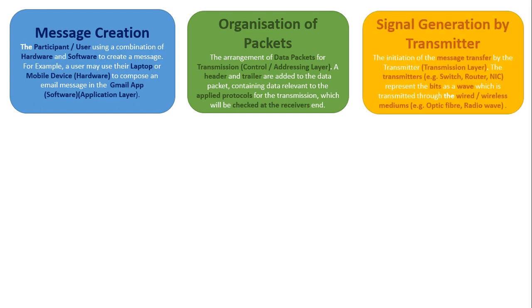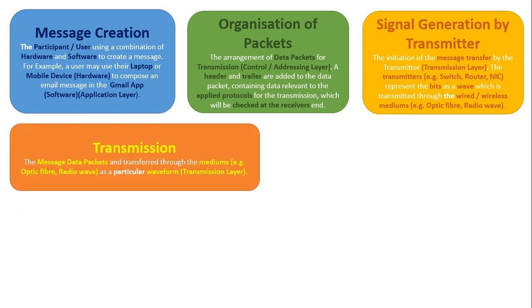After this stage, we have signal generation by the transmitter — this is the initiation of the message transfer. Now we're looking at the transmission layer. The transmitter, which could be a switch, a router, or a network interface card, represents the bits as a wave. It's turned into a wave which is then transmitted through wired or wireless mediums, such as optical fiber or radio waves using wireless technology. The message data packets are then transferred through these mediums as a particular waveform — this is the transmission stage.